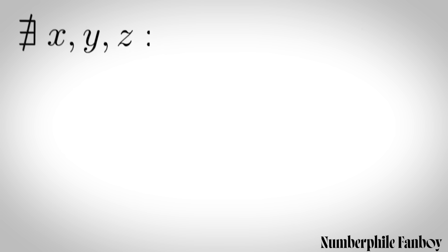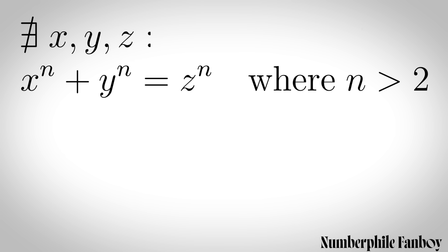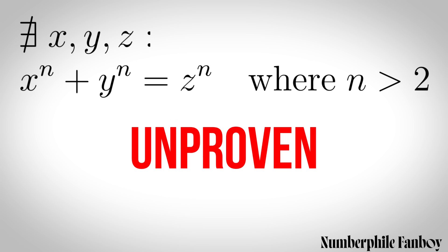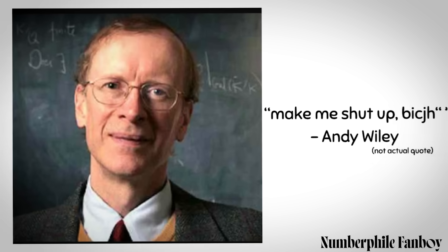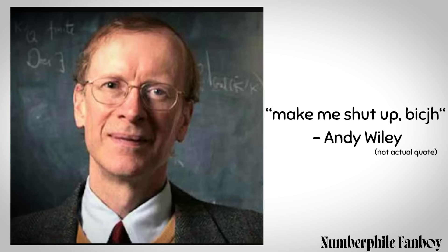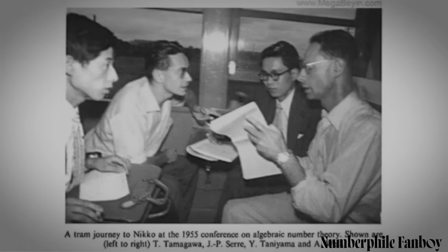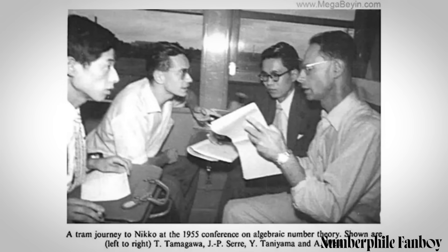Fermat's Last Theorem states that there are no positive integers x, y, z such that x to the n plus y to the n equals z to the n, where n is greater than 2. It remained unproven for 350 years until Andrew Wiles finally proved it in 1994 using elliptic curves, modular forms, and the Taniyama–Shimura conjecture.